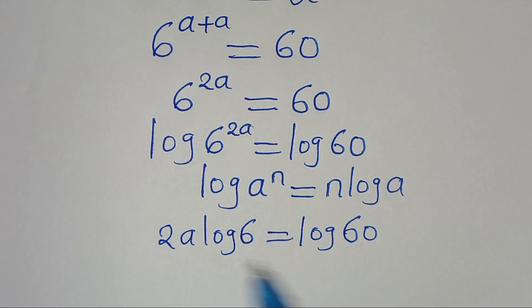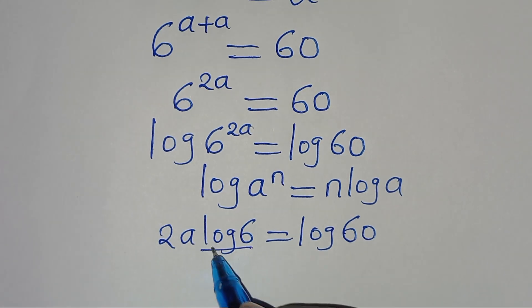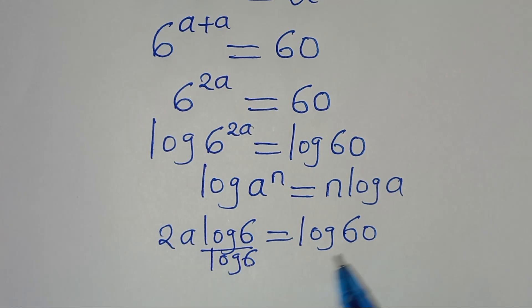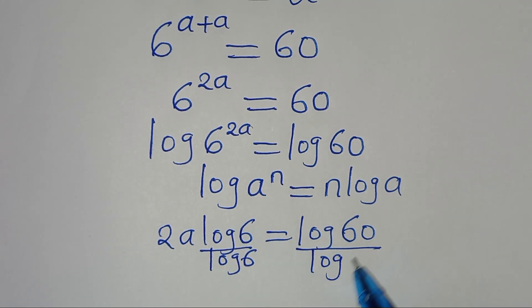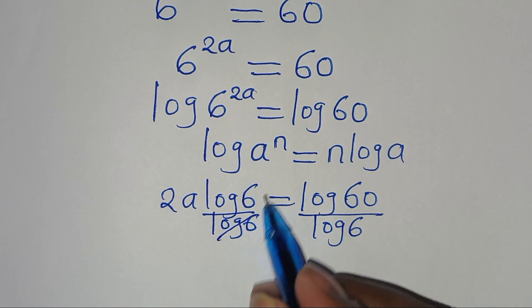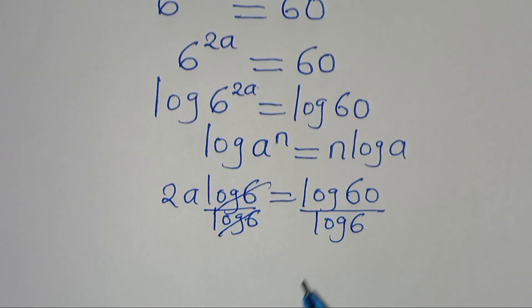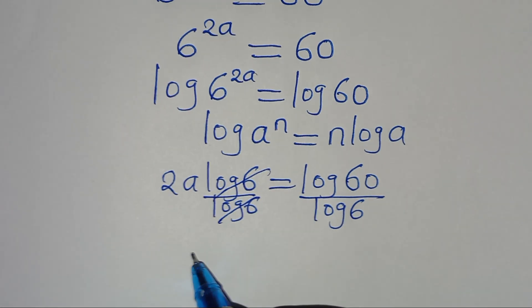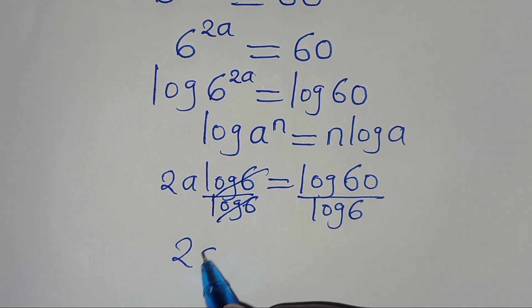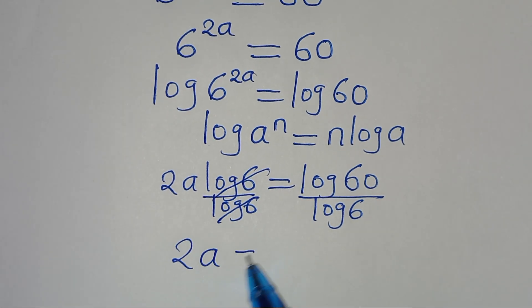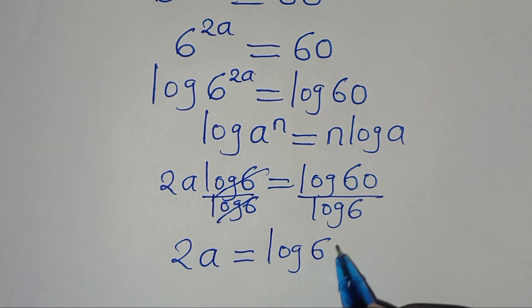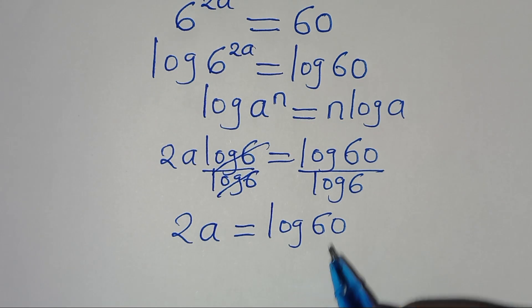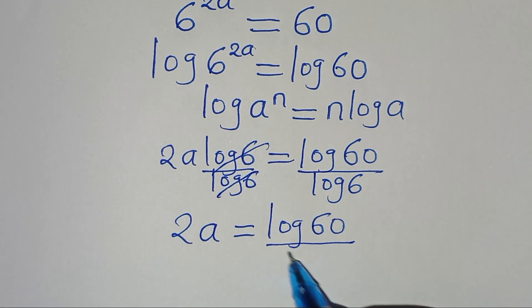Now let's divide both sides by log 6. We can simplify log 6 and log 6, so that we have 2a, which is equal to log 60 divided by log 6.